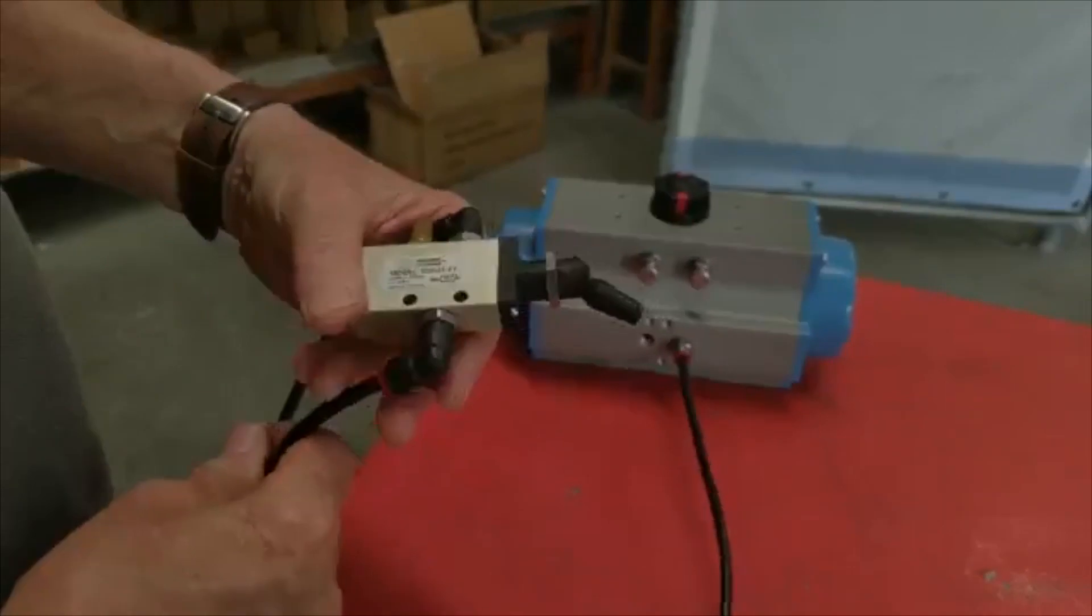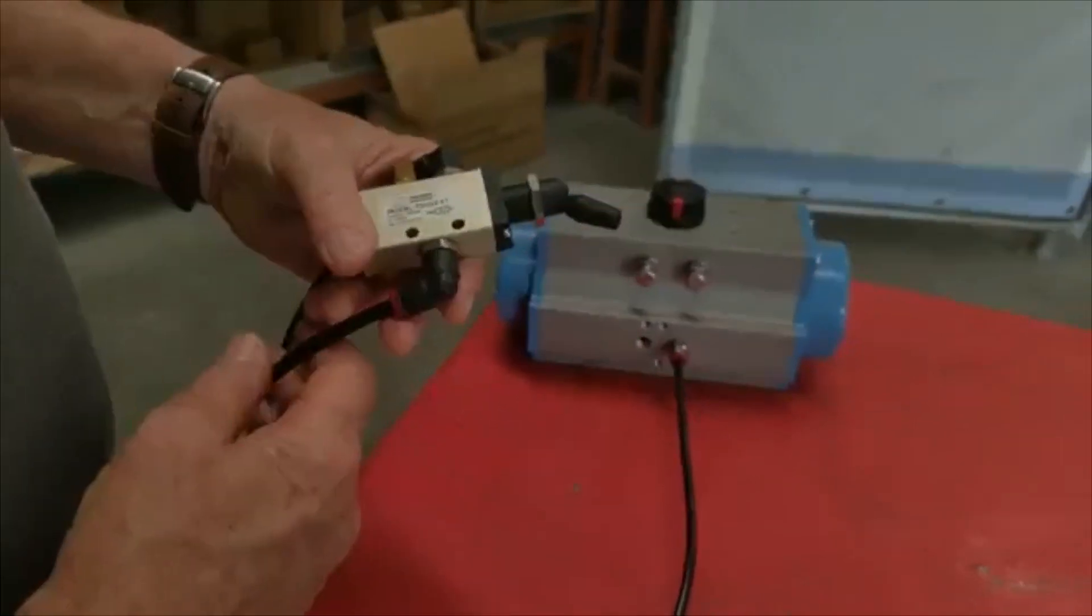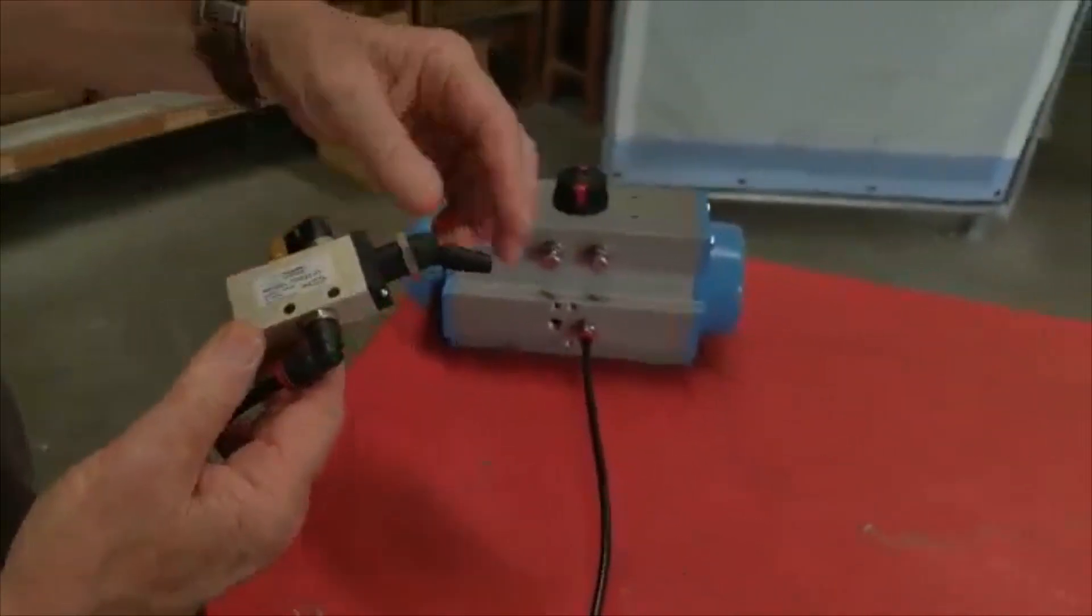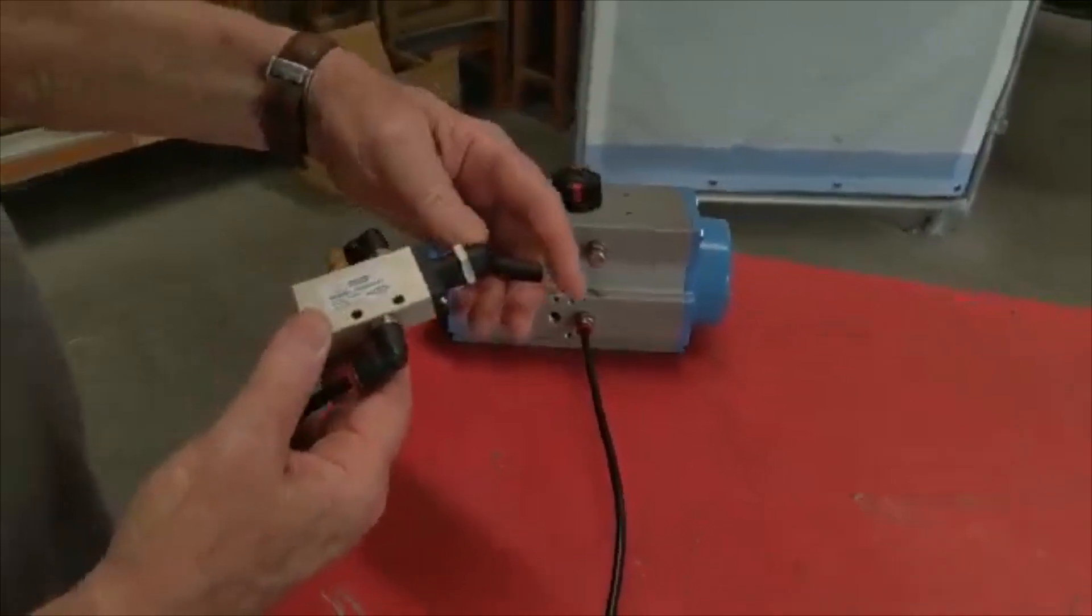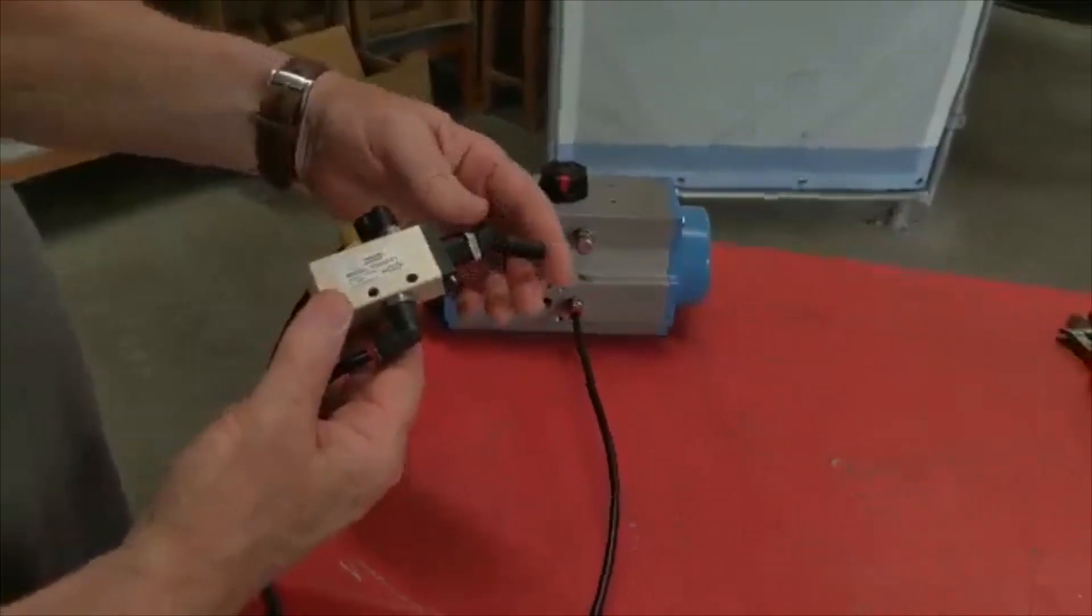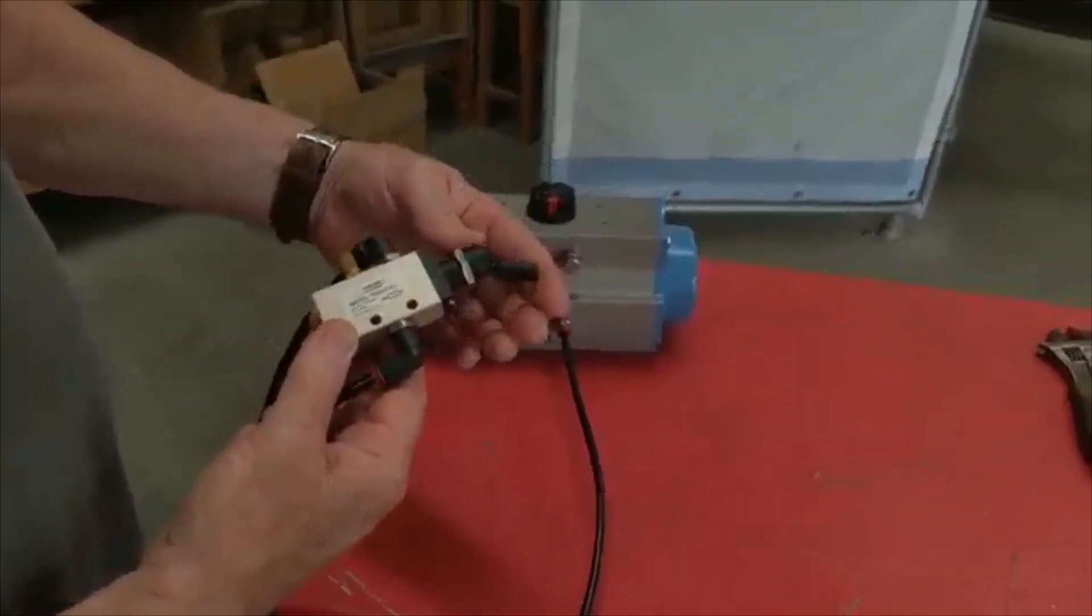It's a spring return pneumatic actuator. I'll just operate the toggle. That released the actuator when the toggle was energized. If I operate it in this direction, that's now putting air through.